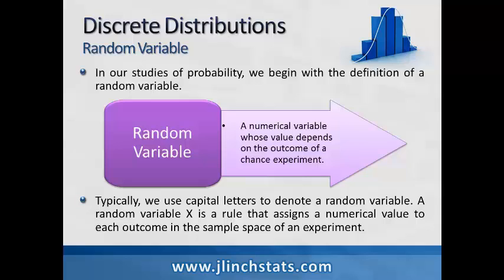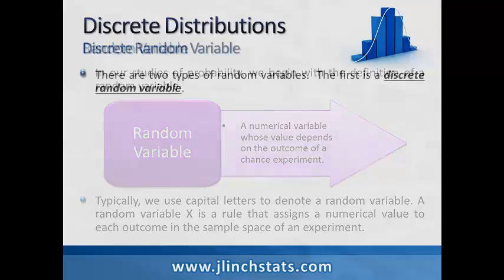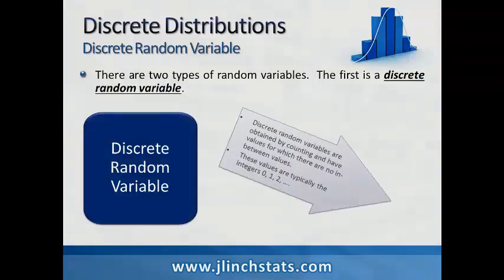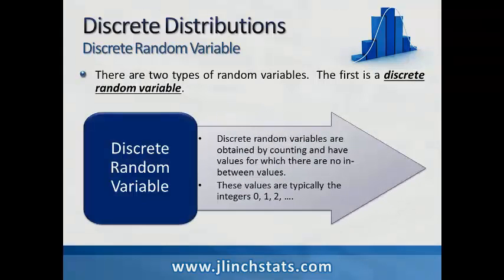Once again, a random variable is a numerical variable whose value depends on the outcome of a chance experiment. Now we have two types of random variables: the discrete random variable and a continuous random variable.